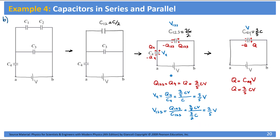Remember what we said: when you have two capacitors connected in series, they will have the same charge and they will share the voltage. The one with the larger capacitance has the lower voltage. Now let's move back one more step.